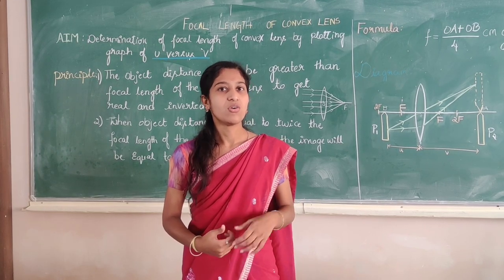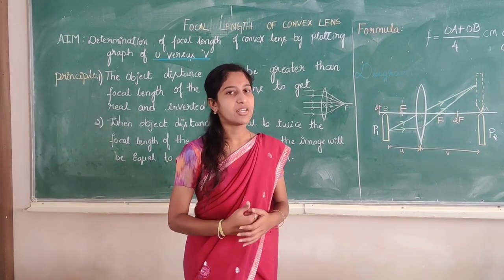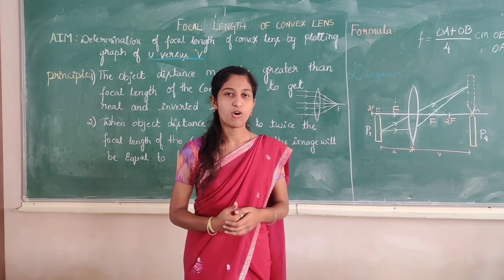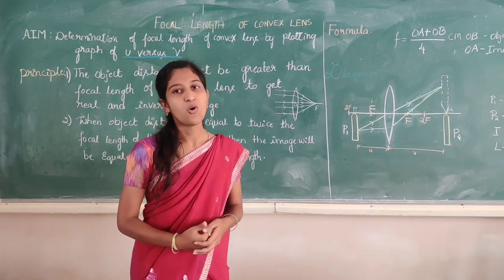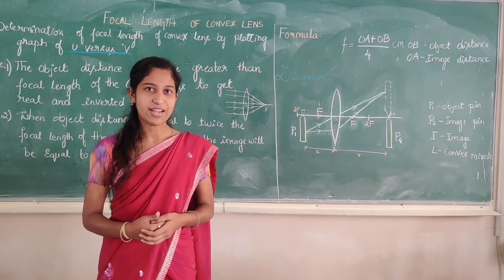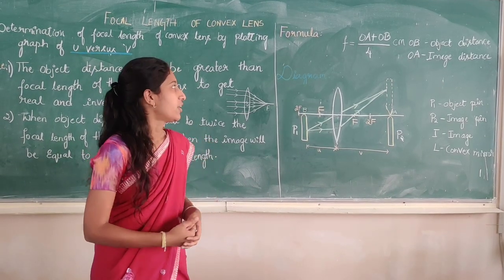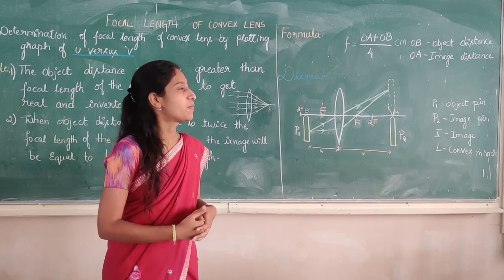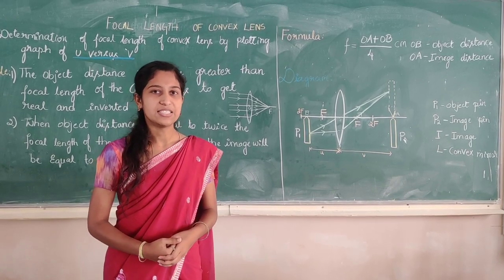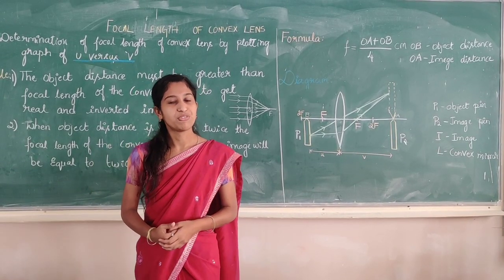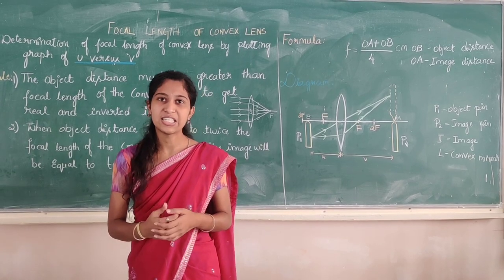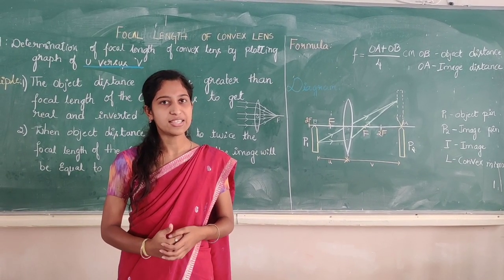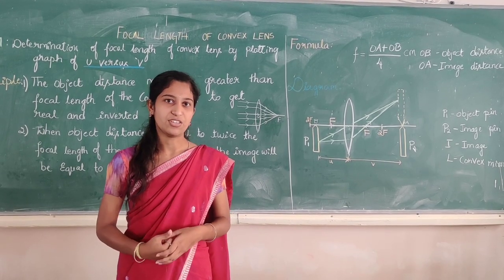Let us look into the formula associated with this experiment. The formula is F equals OA plus OB divided by 4, where OA represents the image distance and OB represents the object distance. We measure the focal length of the convex lens in centimetres, so the SI unit of focal length is centimetre.